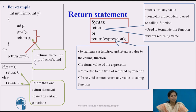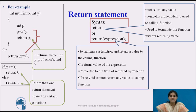Next, let us see another example of the return statement. A return statement may return more than one value, meaning a function may have more than one return. This situation occurs when the value returned is based on a certain condition. In this example, we use an if-else statement. We specify a condition: if x is less than or equal to 0, then return the value 0; otherwise, return the value 1.